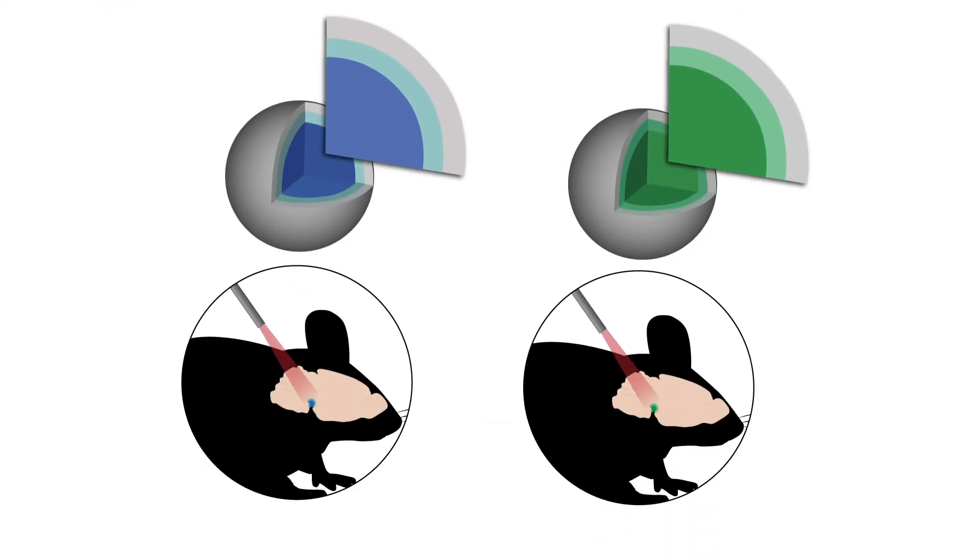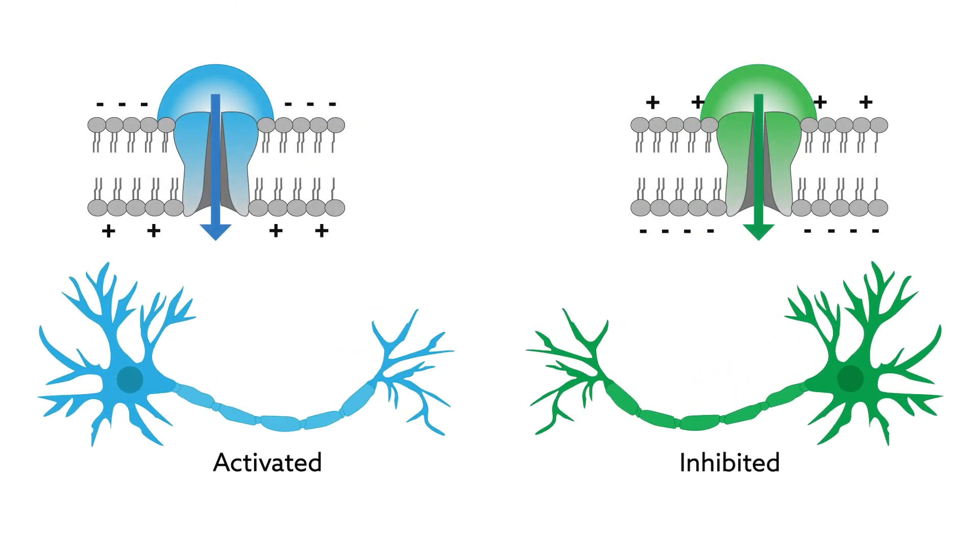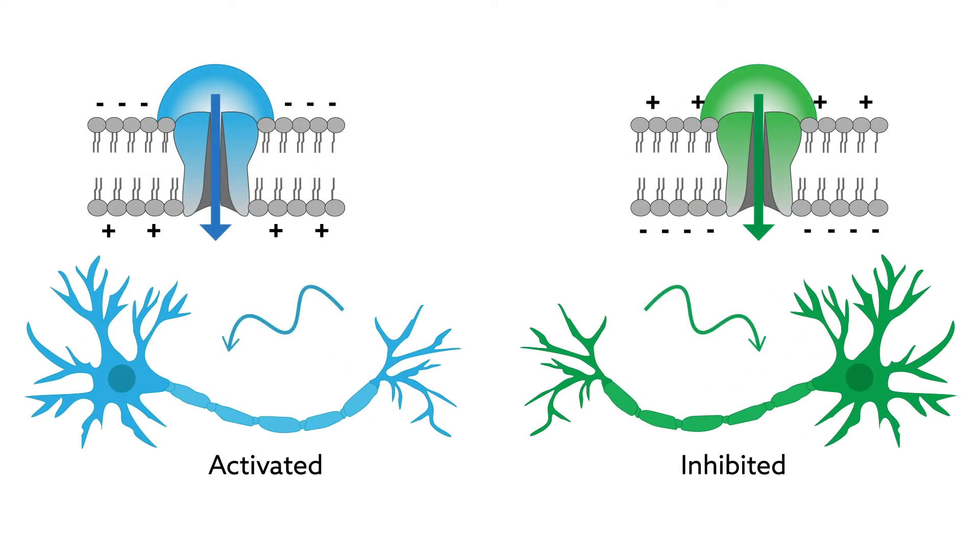The team also altered the particles to make them emit different wavelengths of light. By changing whether the particles emitted green versus blue light, for example, they could selectively activate or inhibit neighboring neurons that contain different types of light-responsive proteins.